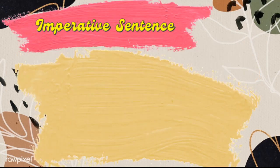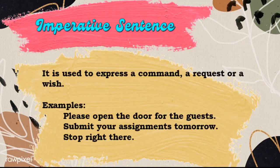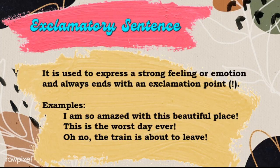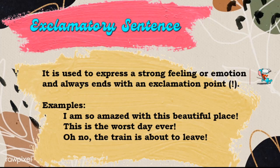The third kind of sentence according to use is called an imperative sentence. It is used to express a command, a request, or a wish. Examples: Please open the door for the guests. Submit your assignments tomorrow. Stop right there. The last kind of sentence according to use is called an exclamatory sentence. It is used to express a strong feeling or emotion, and always ends with an exclamation point. Examples: I am so amazed with this beautiful place! This is the worst day ever! Oh no! The train is about to leave!